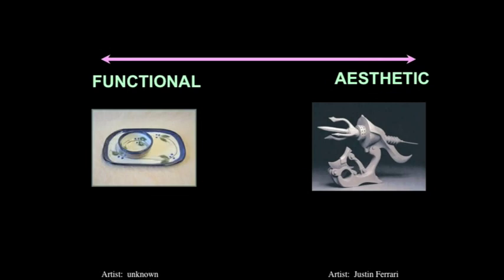The one on the left definitely functions very well as a chip bowl and salsa plate — you could put it out and use it, it goes in the dishwasher, it's very functional. On the other hand, it's pretty attractive too, so you'd have to move it up the line a little ways. Now look at Justin Ferrari's sculpture on the right — this piece is totally aesthetic in nature. It's largely corner slab and a little bit of cylinder slab construction — techniques you're becoming familiar with. You can see that artists are using the techniques you are learning, but turning them into more sophisticated projects because they've had more experience. As you gain experience, you can become better at this too.